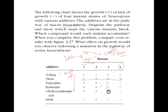Now let's see where we get 2 pluses — mutant number 3 grows with niacin and 3-hydroxyanthranilic acid. So if you provide 3-hydroxyanthranilic acid or niacin it will grow, but tryptophan, kynurenine, or indole will not support growth. So mutant 3 is positioned just before 3-hydroxyanthranilic acid.